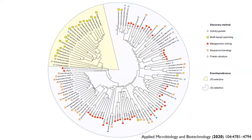This motif-based searching goes back to Bornscheuer's group, where they investigated a motif-based searching algorithm without knowledge of any crystal structure, and identified 17 different transaminases using the already known motifs of the R-transaminase from Arthrobacter.